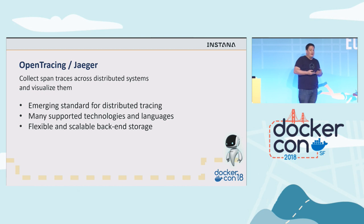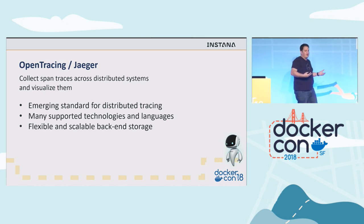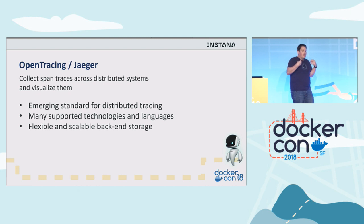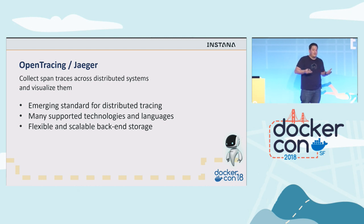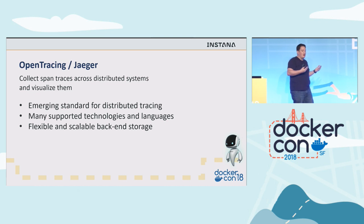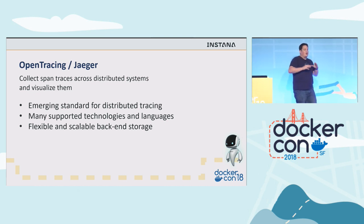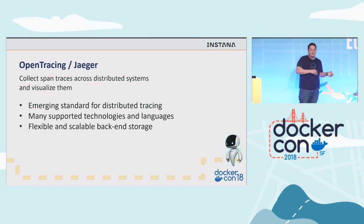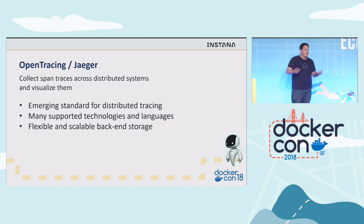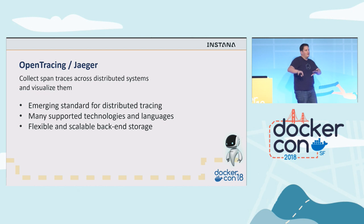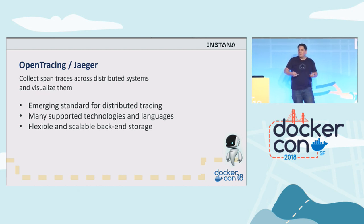Next is OpenTracing and Jaeger, which are both CNCF-backed projects. These tools empower engineers to increase the observability of the systems they build and manage. They have support around many different languages, including Java, Go, JavaScript, C#, Objective-C, Ruby, PHP, and probably a few others. There's a lot of driver support for .NET and Java, including Kafka, Cassandra, JDBC, and Elasticsearch. The storage backend where it collects all of these traces includes Cassandra, Elasticsearch, and experimental drivers such as Influx and DynamoDB.